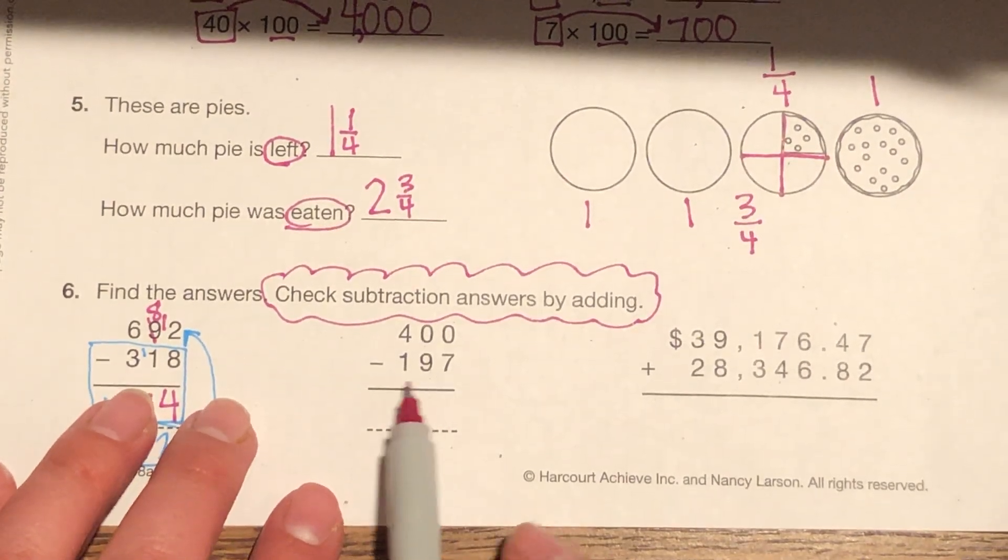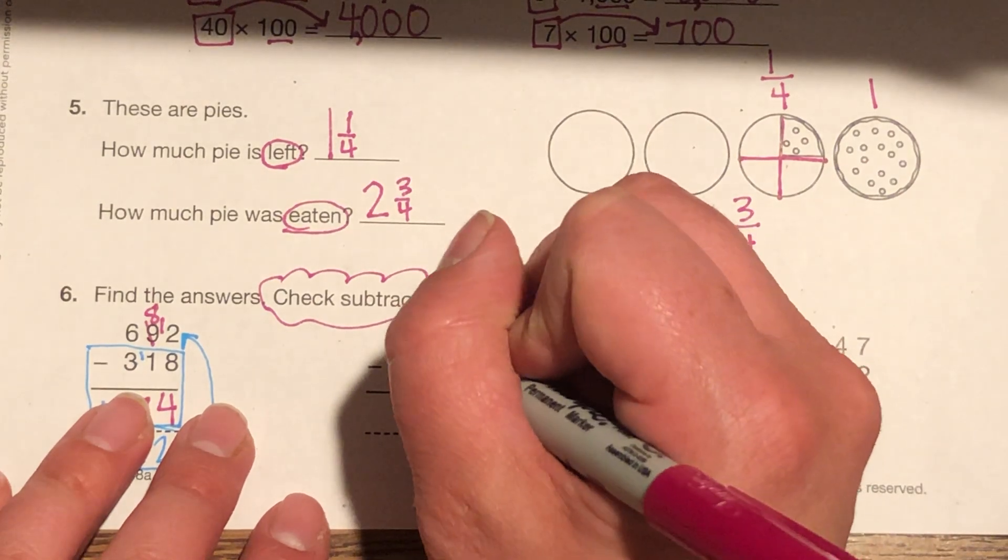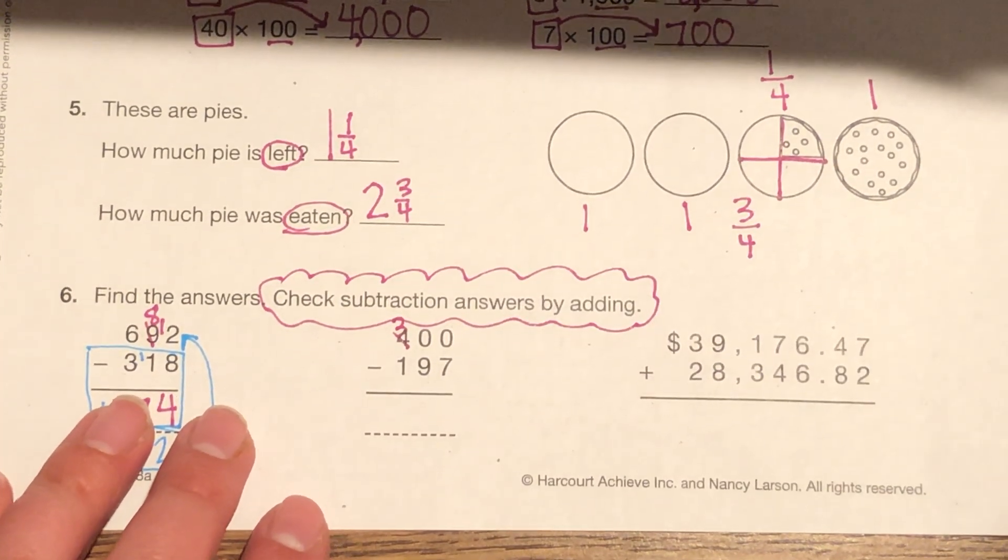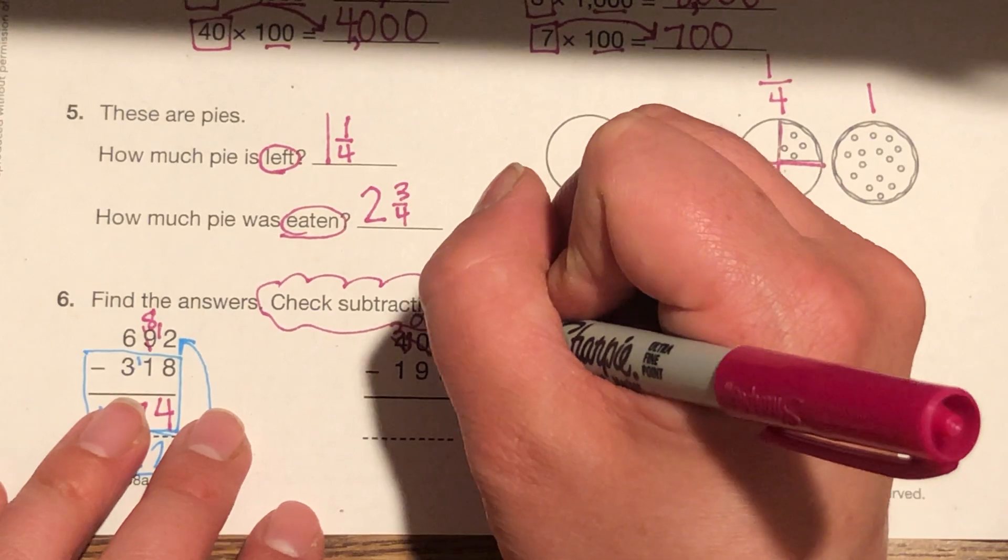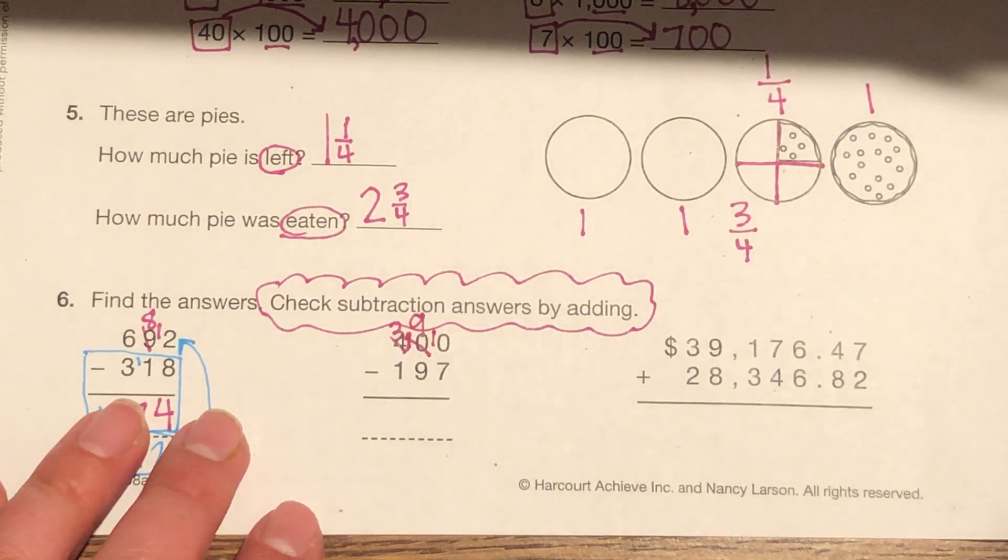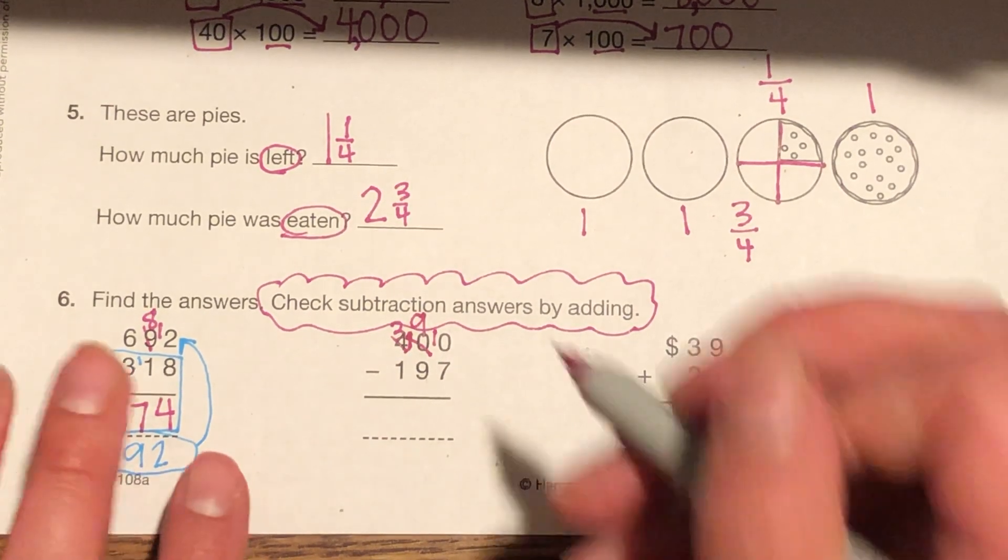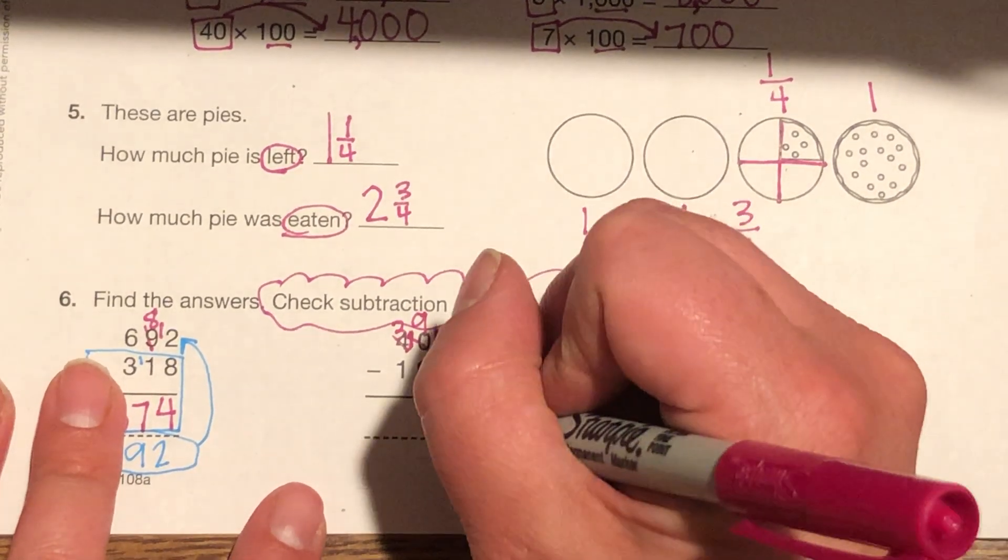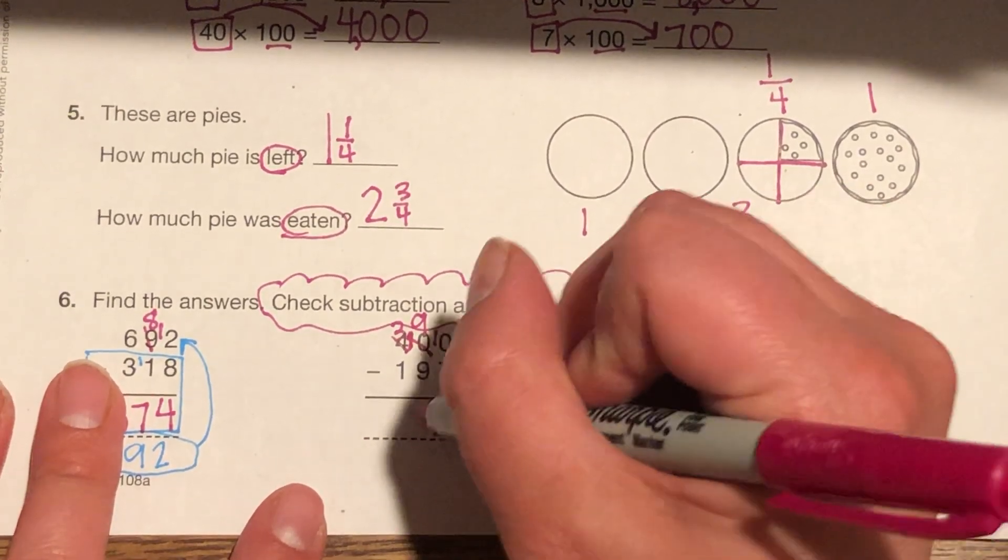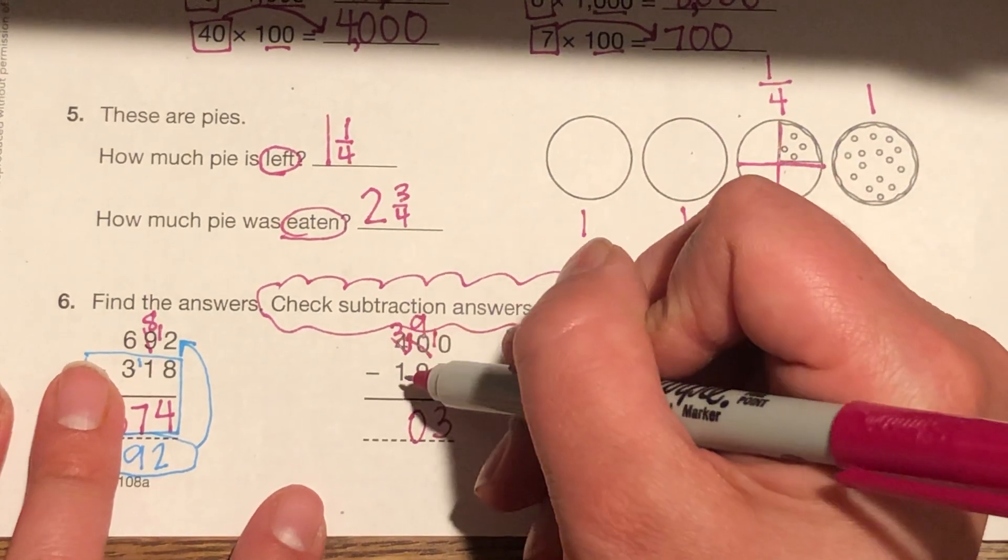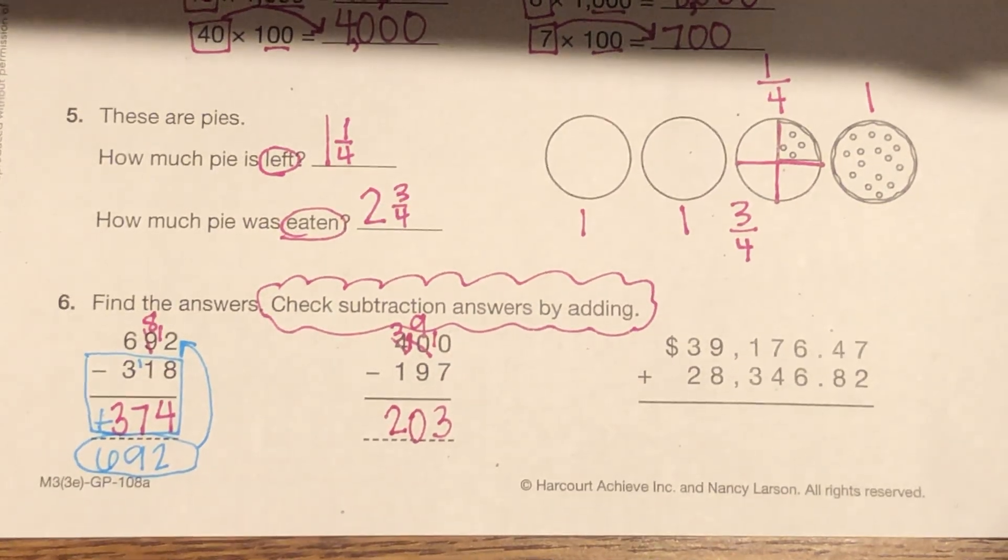Now, I have four hundred minus one hundred ninety-seven. So, I know I've got two zeros here. I can't take seven away from zero. I'm going to hop over, borrow from my hundreds. So, right away, that becomes three. I have ten tens, but I'm going to need to borrow from that. So, now I have three hundreds, nine tens, and ten ones. What is ten minus seven? That's three. What is nine minus nine? That's zero. What is three minus one? That's two. So, I have the answer of two hundred three.